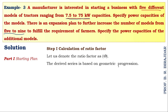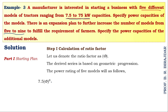The power ratings of the five models will be as follows: the first model is 7.5 multiplied by φ raised to zero. When we find different models, we multiply the first model by the ratio factor to get the second model, then multiply the second model by the ratio factor to get the third model, and so on.